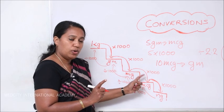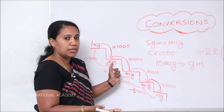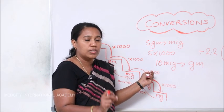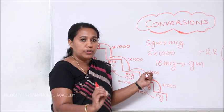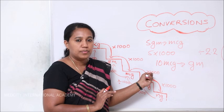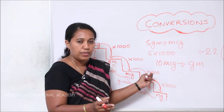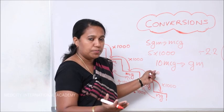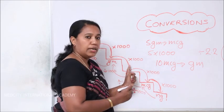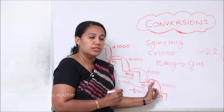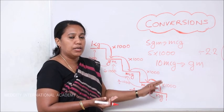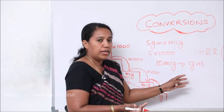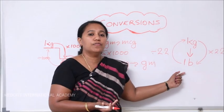To clarify: when you go two steps down or two steps up, it does not mean you multiply or divide by 2000 in one go. You need to multiply or divide by 1000 twice — once for each step. Most exam questions involve converting gram to microgram or microgram to gram. Milligram to microgram is only one step, so just multiply by 1000 once, whereas gram to microgram requires two multiplications by 1000.